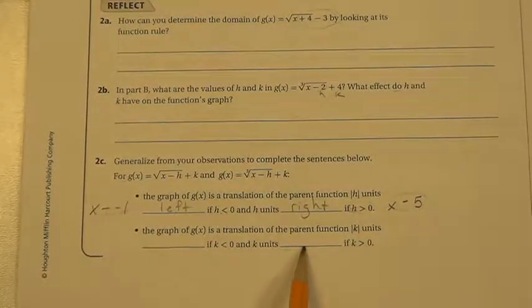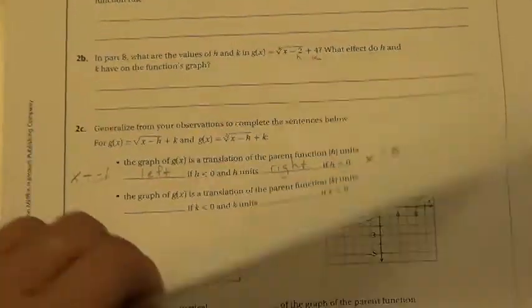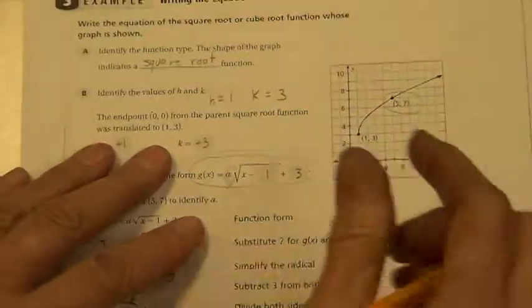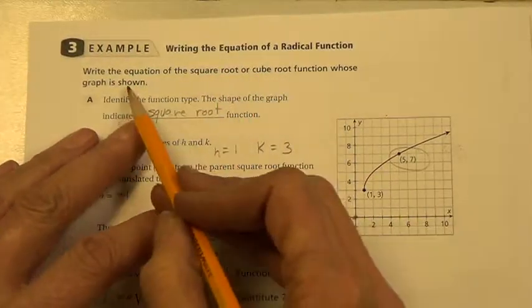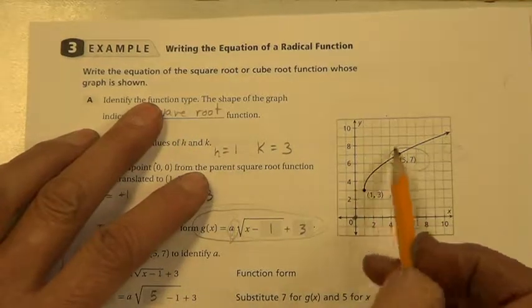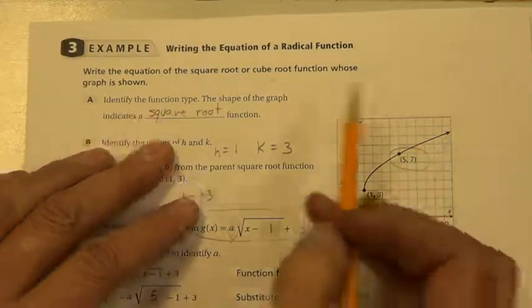Then go ahead and fill in this on the k units. k is greater than 0, where it causes it to shift. When k is less than 0, how it shifts. On the very back page, write the equation of the square root or cube root function whose graph is shown. That would be a square root because it doesn't make the complete s. So it's a square root.